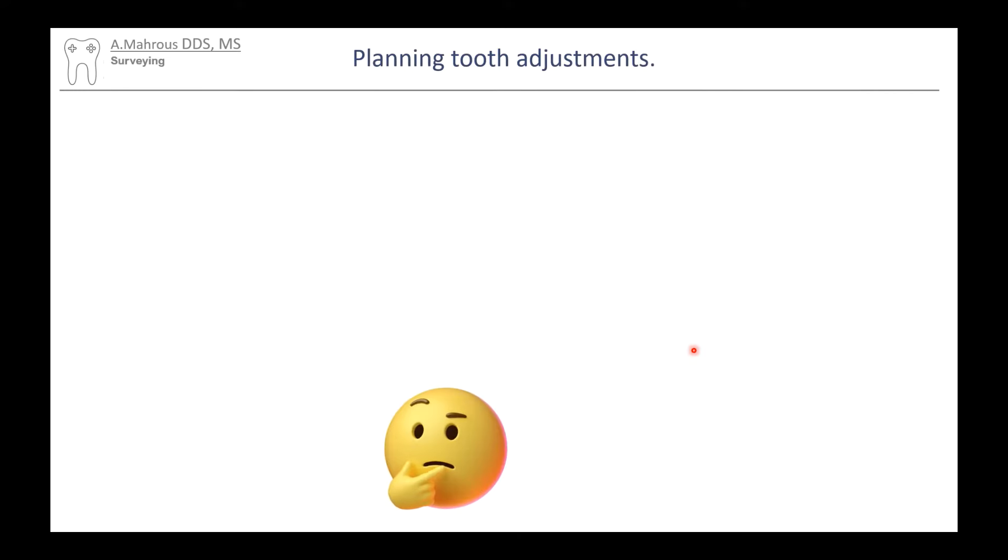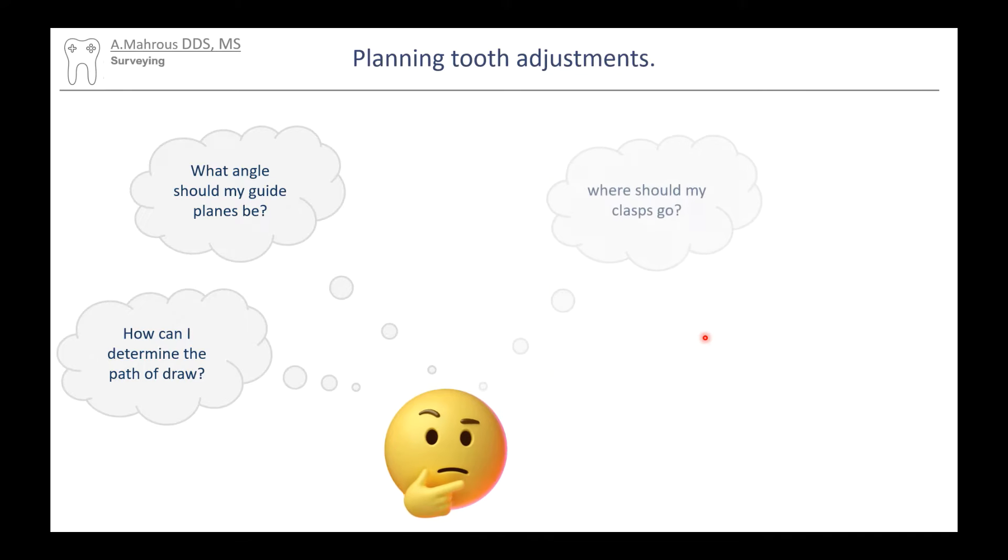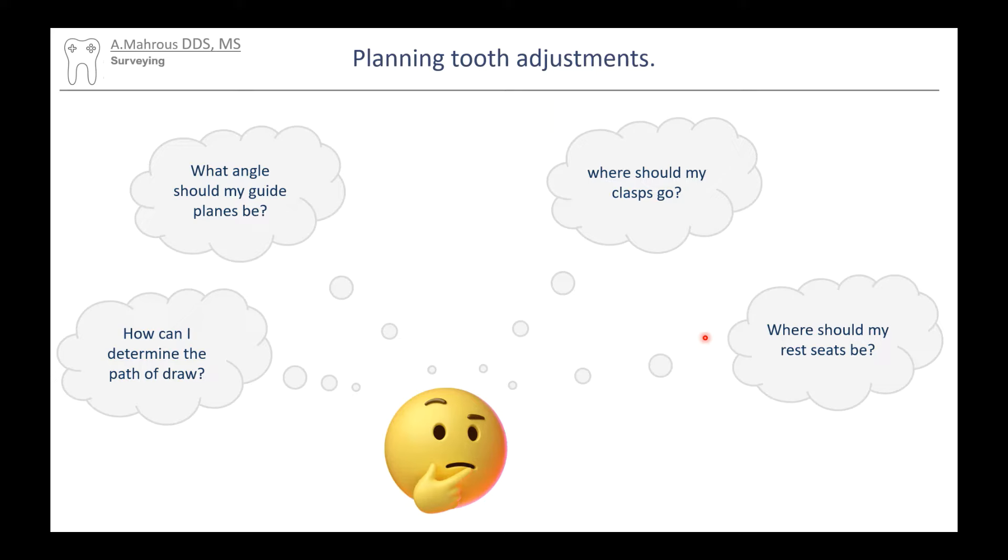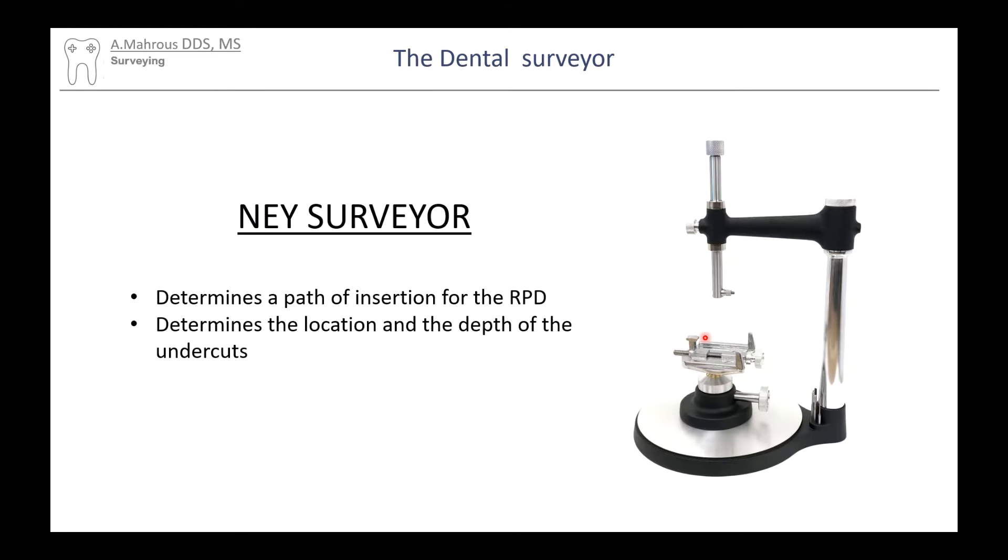Now, before designing an RPD or preparing guide planes and rest seats, you'll be asking yourself: How do I determine the path of draw? What angle should my guide planes be? Where should my clasps go? And where should my rests be? Now to help you answer all these, we have what we call a surveyor.